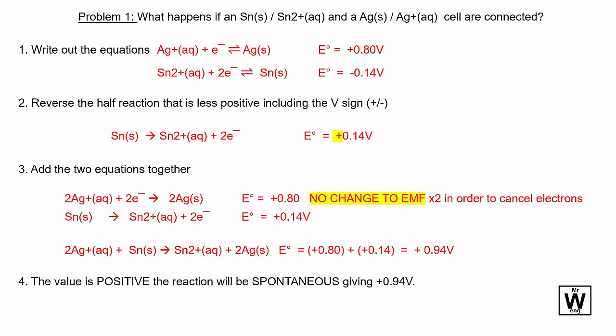So follow those four steps as a practice problem. And so this one, you've got tin and silver. So if you go to your data booklet, these are the two formulas here. This one here is the most positive.